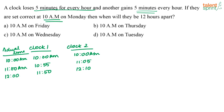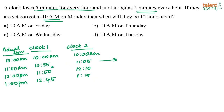When actual time is 1 PM, clock 1 will show 12:45 and clock 2 will show 1:15. Looking at the difference between the two clocks: at 11 AM the difference is 10 minutes (10:55 vs 11:05); at 12 PM the difference is 20 minutes (11:50 vs 12:10).